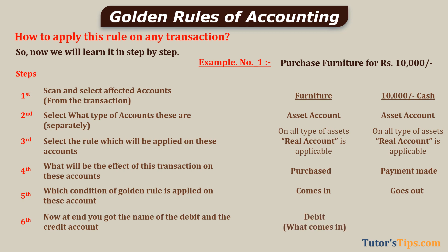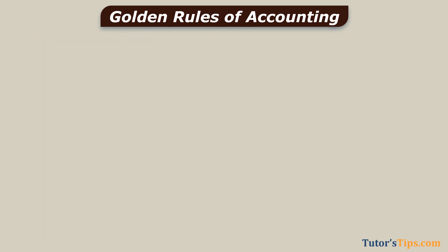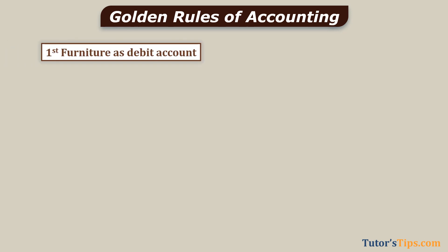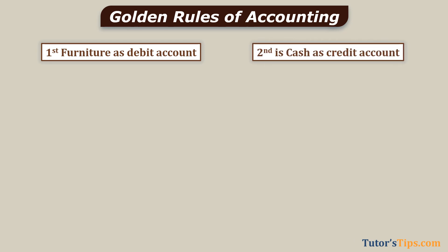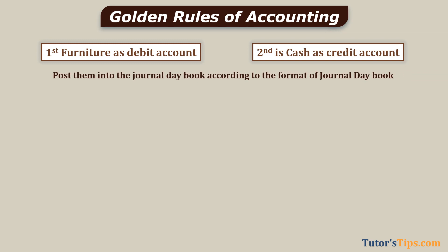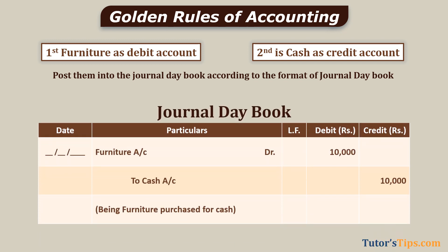Step six: now at the end, we get the debit and credit accounts according to the Golden Rules of Accounting. Debit what comes in; credit what goes out. After completing this six-step process, we get: first, furniture account as the debit account; second, cash account as the credit account. Post them into the Journal Day Book. The journal entry will be read as: Furniture Account debit to Cash Account.